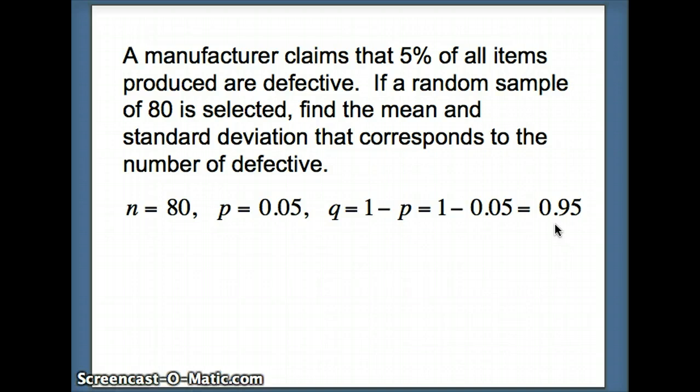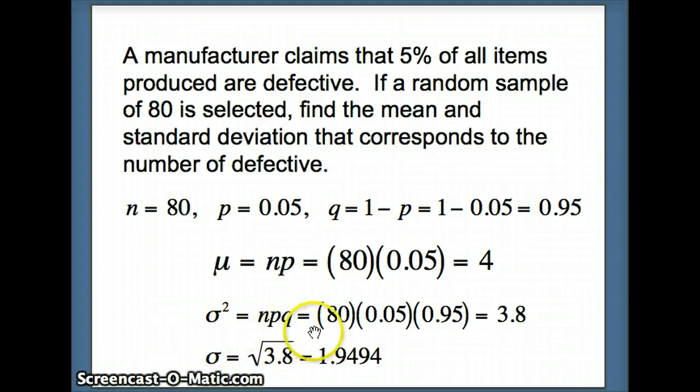Now we can use that information to find the mean and the variance for this random variable. We know the mean mu is N times P. So we take 80 times 0.05, which is 4. What does that represent? That represents the expected number of defectives. If we have 80 items in our set, we expect 5% to be defective. We would expect 4 to be defective on average in the long run. Sigma squared is NPQ, 80 times 0.05 times 0.95 is 3.8. So the variance is 3.8, but the standard deviation is the square root of 3.8. The standard deviation is 1.9494.